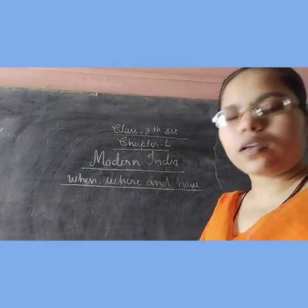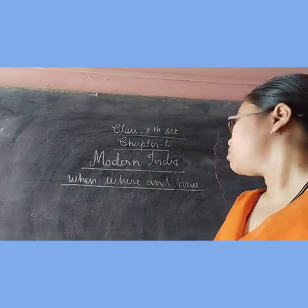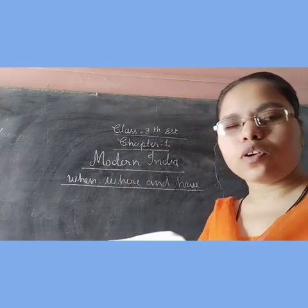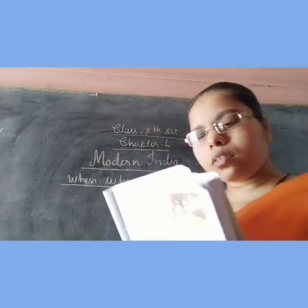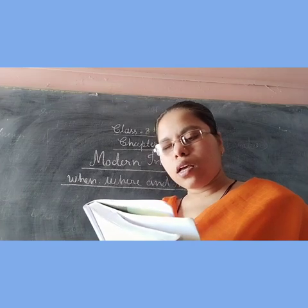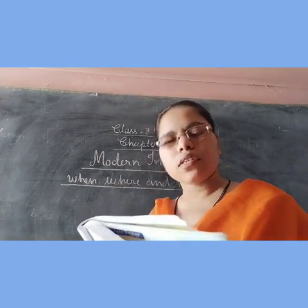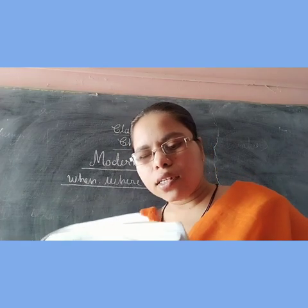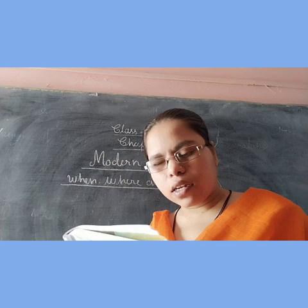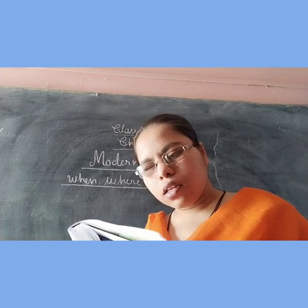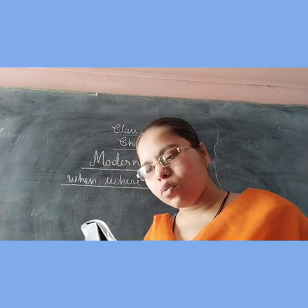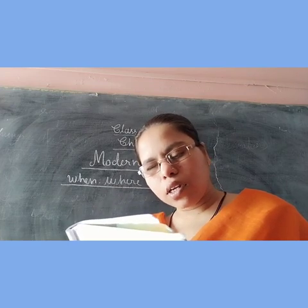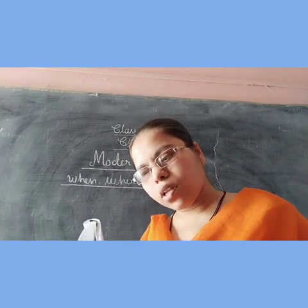Today we will continue our chapter number 1. The Declaration of Independence of America, July 4, 1776, contained truly revolutionary ideas. It asserted that all men are created equal and they are endowed with the inalienable right to life, liberty, and the pursuit of happiness, meaning every individual has the right to free himself from oppression.